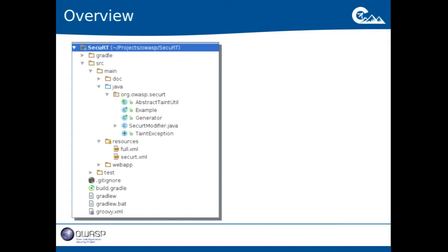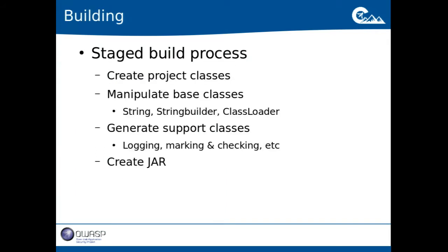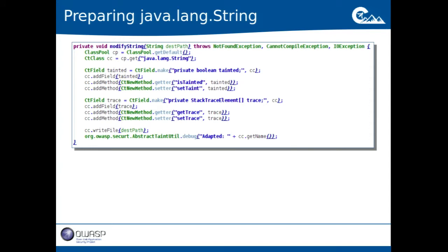At the moment it's a fairly small application. I have a generator that generates the various base classes and some utility classes — that's the basic of what I add into the bootstrap classes. The build process: I create my project classes, manipulate the base classes (String, StringBuilder, ClassLoader), add support classes, and the last step is to create a JAR to use with other techniques.